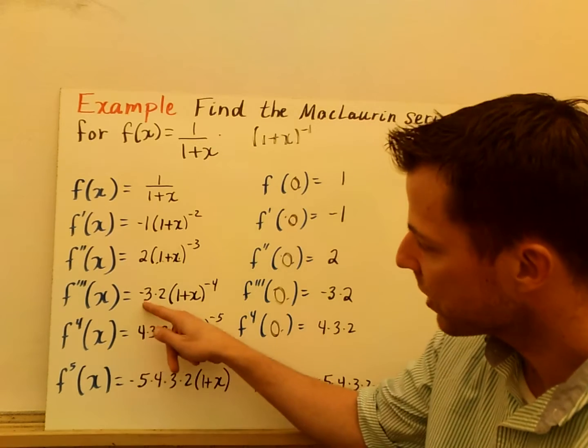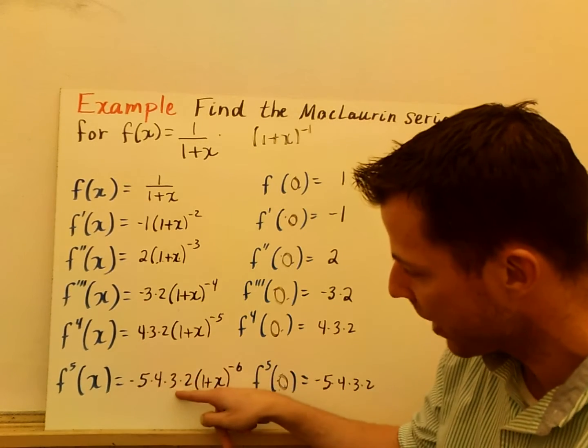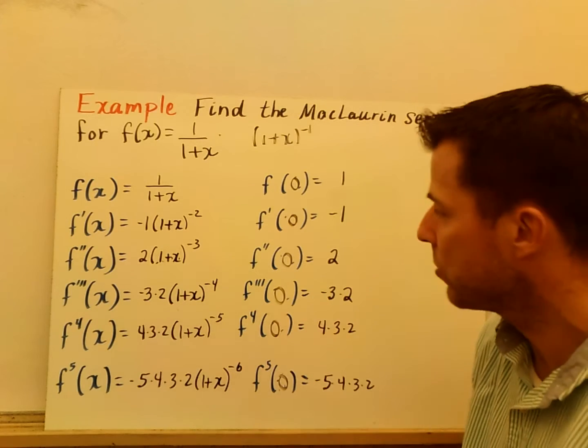I didn't multiply those out, so it looks like you're seeing a factorial here, right? And every other term is negative, so there's some patterns we can see there.